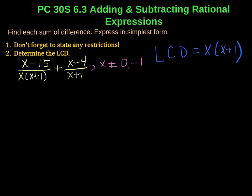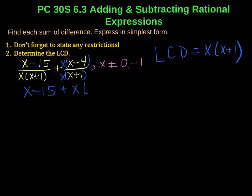Now we notice that the second expression is missing the x part of the LCD. So to fix that, I multiply the denominator by x, and I have to multiply the numerator by x as well. Now if I look at the denominators of both parts, I have the same denominator. Now I can simplify by combining the like terms in the numerator. I've got x minus 15 plus x times x minus 4, and we need to remember to multiply that x through the bracket.